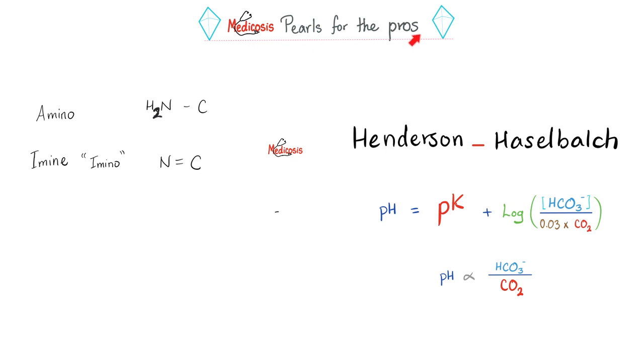Some pearls for the pros. What's the difference between amino and imino? Amino is C bound to N with a single bond. But look at imino. Double bond. Don't forget the pH and the pKa. They are also involved in something else called the Henderson-Hasselbalch equation. What if the numerator equaled the denominator? When this equals this, the ratio is going to be 1. What's the log 1? 0, baby. And now the pH equals the pK. Of course, as you add more bicarbonate, pH goes up. And as you add more carbon dioxide, pH goes down.